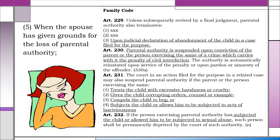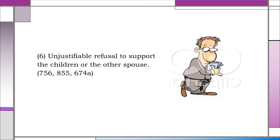Number five cause to disinherit a spouse is when the spouse has given grounds for the loss of parental authority. Not all causes or grounds for the loss of parental authority are grounds to disinherit a spouse; however, the grounds enumerated under Articles 229, 230, 231, and 232 of the Family Code are grounds to disinherit a spouse. The last ground, number six, is unjustifiable refusal to support the children or the other spouse, which is also found in Articles 919 and 920 and had been discussed thereunder.